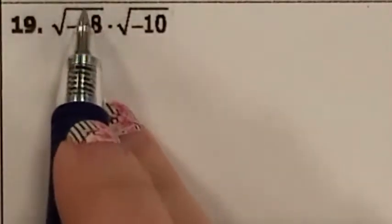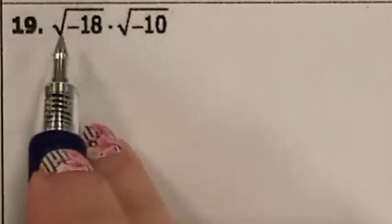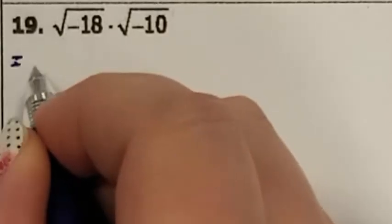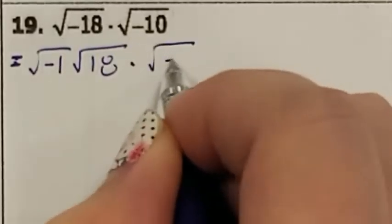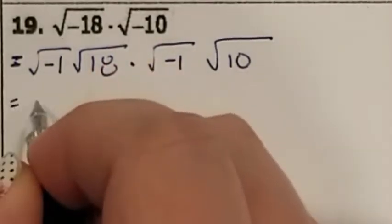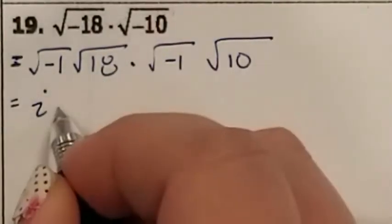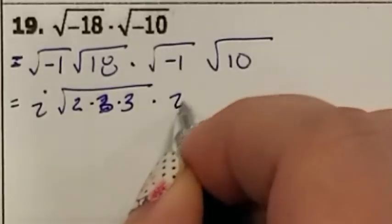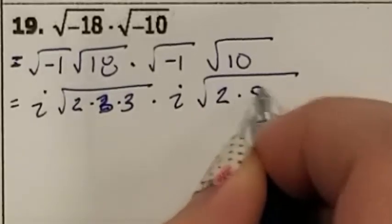Problem number 19: We have the square root of negative 18 multiplied to the square root of negative 10. You cannot take the square root of negatives. So the first thing that we need to do is separate the negative 1 from the 18 and the negative 1 from the 10. Negative 1 is i. Let's prime factorize 18. 18 is 2 times 3 times 3. The square root of negative 1 is i. The square root of 10 is 2 times 5.